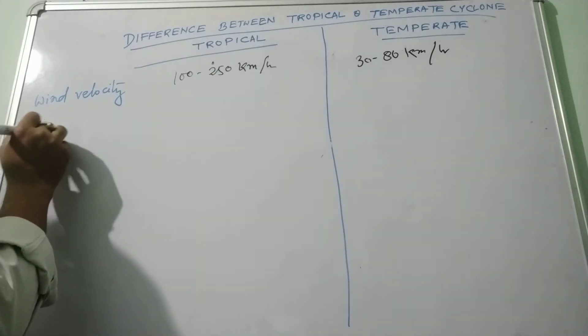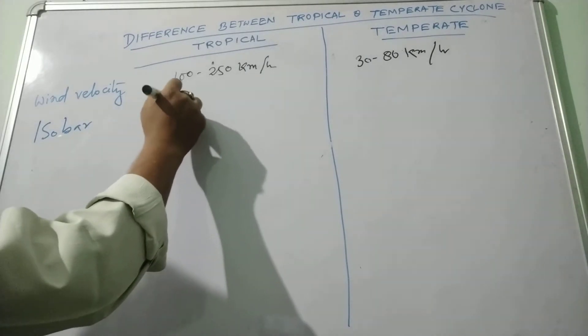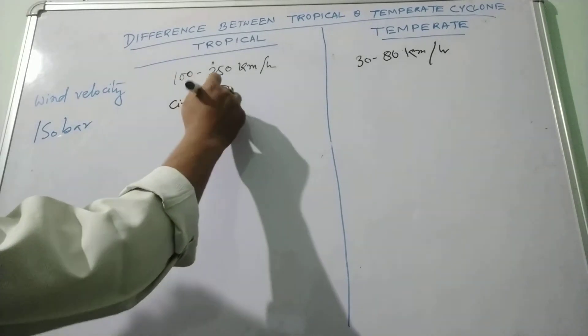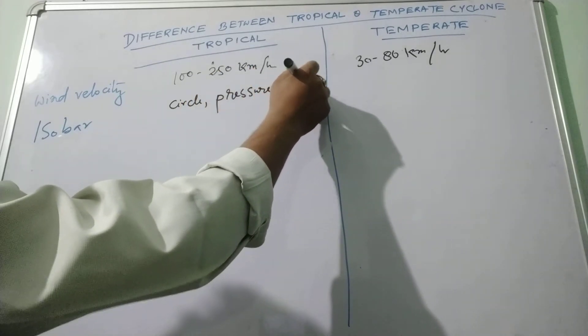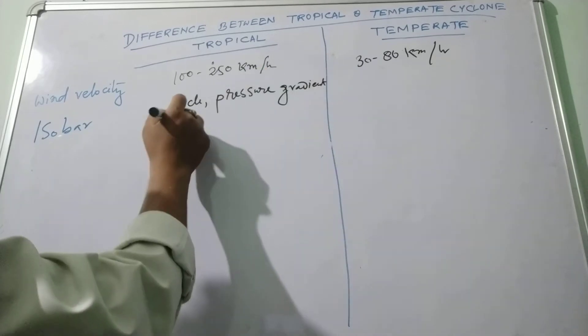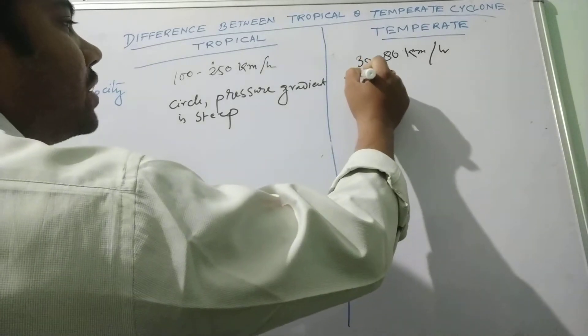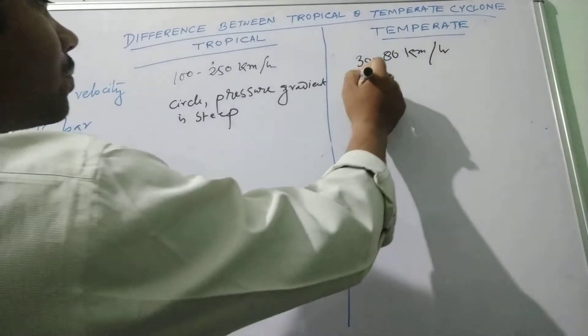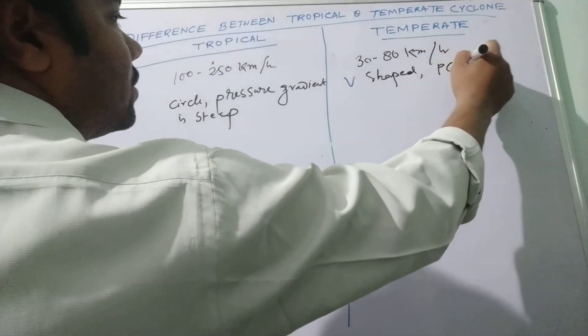Isobar. Isobars of the tropical cyclone are circular and the pressure gradient is strict, whereas in case of the temperate cyclone the isobars are V-shaped and pressure gradient is low.